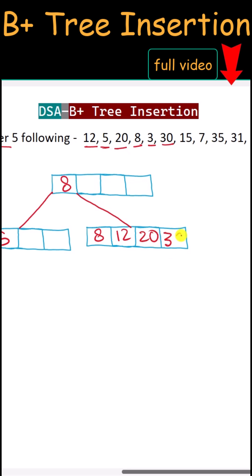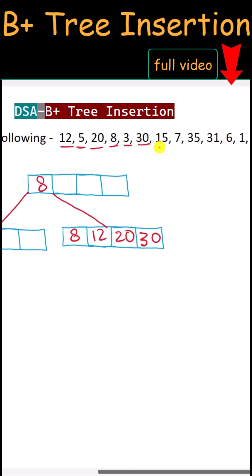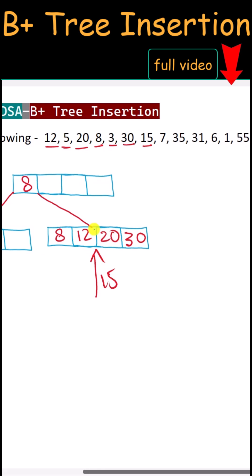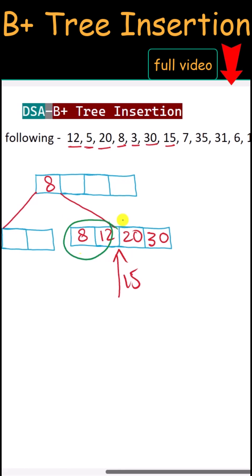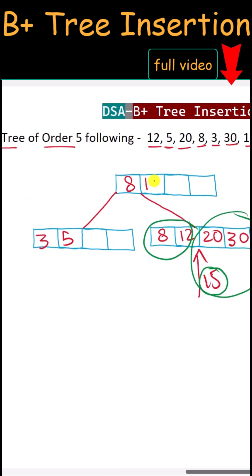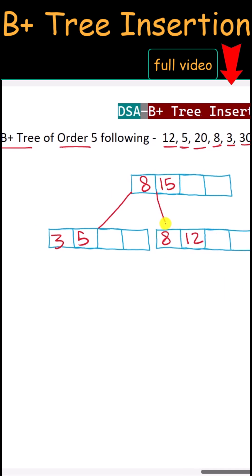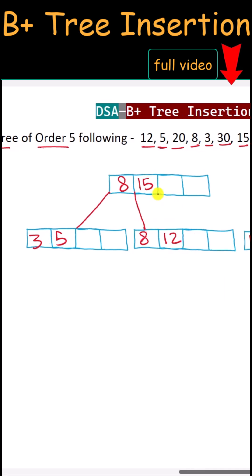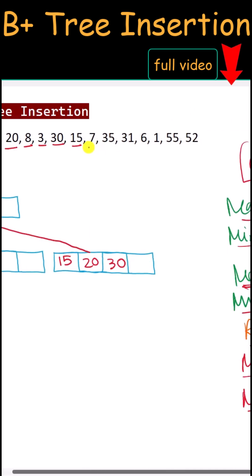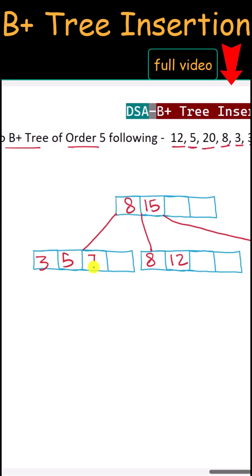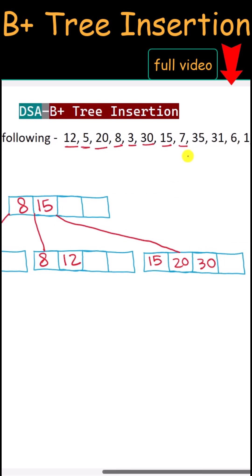Next, 30 is greater than 20 so it is inserted to the right. Next, 15 is inserted between 12 and 20. Now we have to split that node — 15 is the median, so 15 is shifted up to the root node. The left pointer points to the left child and the right pointer points to the right child.